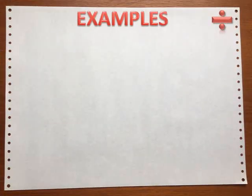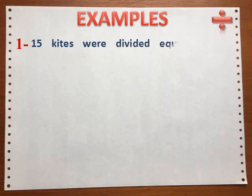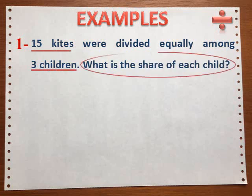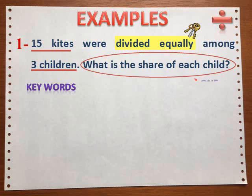Examples: 15 kites were divided equally among three children — what is the share of each child? We have the keywords 'divided equally' and are being asked about 'each', so we are going to use the division operation.